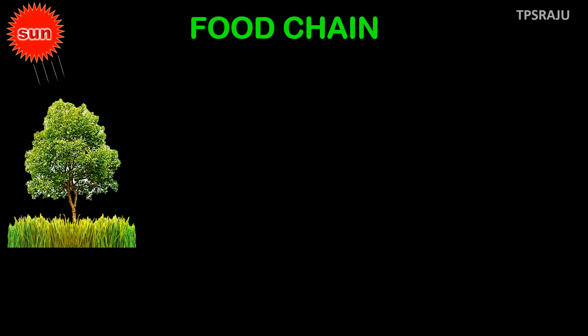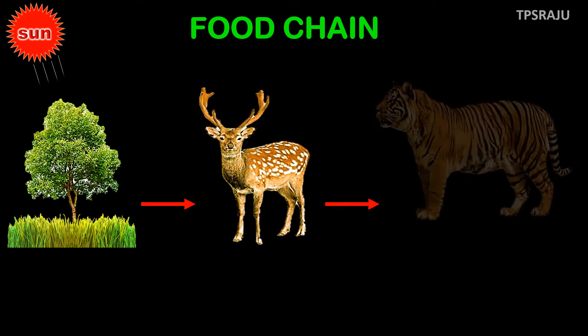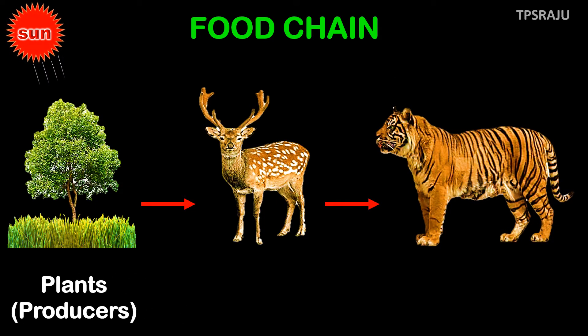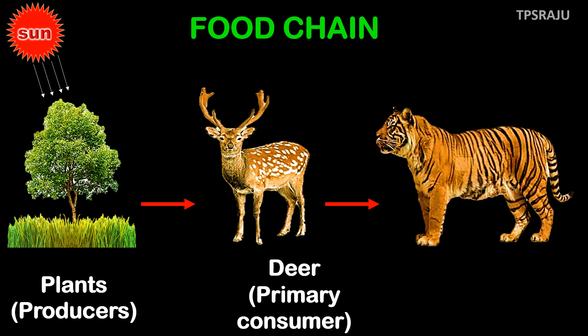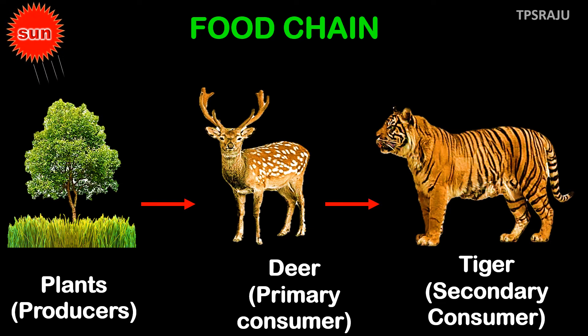Let's learn what a food chain is. For example, in a forest, plants prepare their own food by utilizing sunlight. Deer get energy by eating plants as food. Tiger gets energy by eating deer as food. Here, plants are producers while deer and tiger are consumers. Deer is the primary consumer while tiger is the secondary consumer. Primary consumers means they eat producers. Secondary consumers means they eat primary consumers. This is one food chain.